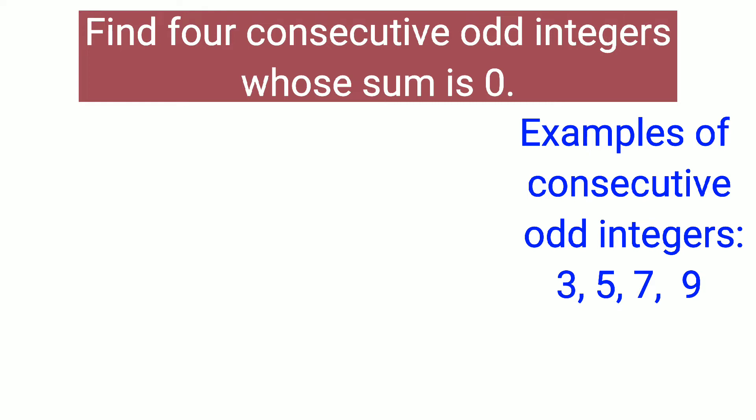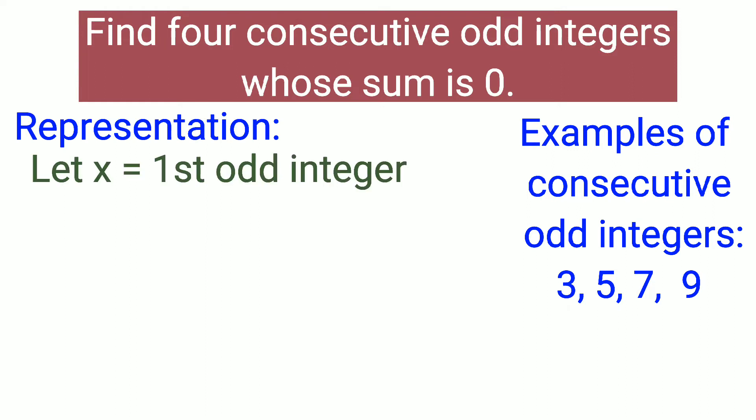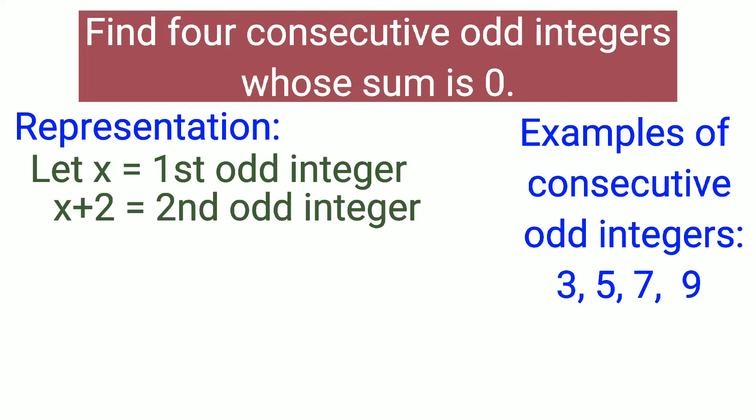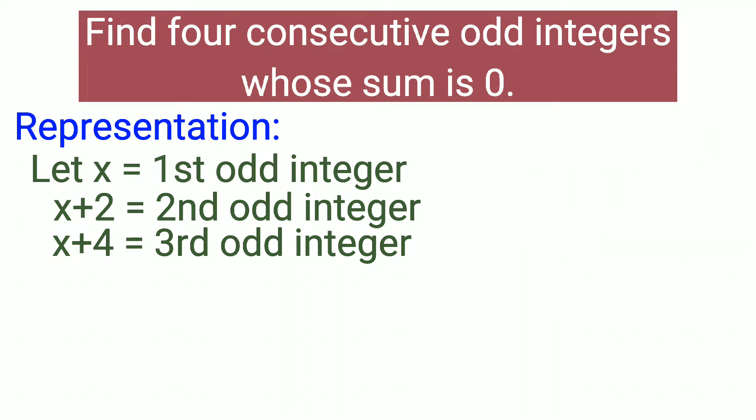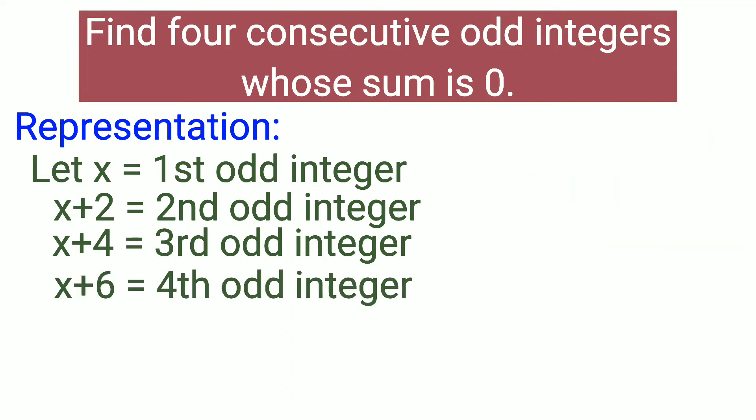So we are going to define our integers. Let x be our first odd integer. Since our integers are odd, we will skip two units from the first odd integer. Our next odd integer will be x plus two, our third odd integer will be x plus four, and our fourth odd integer will be x plus six.